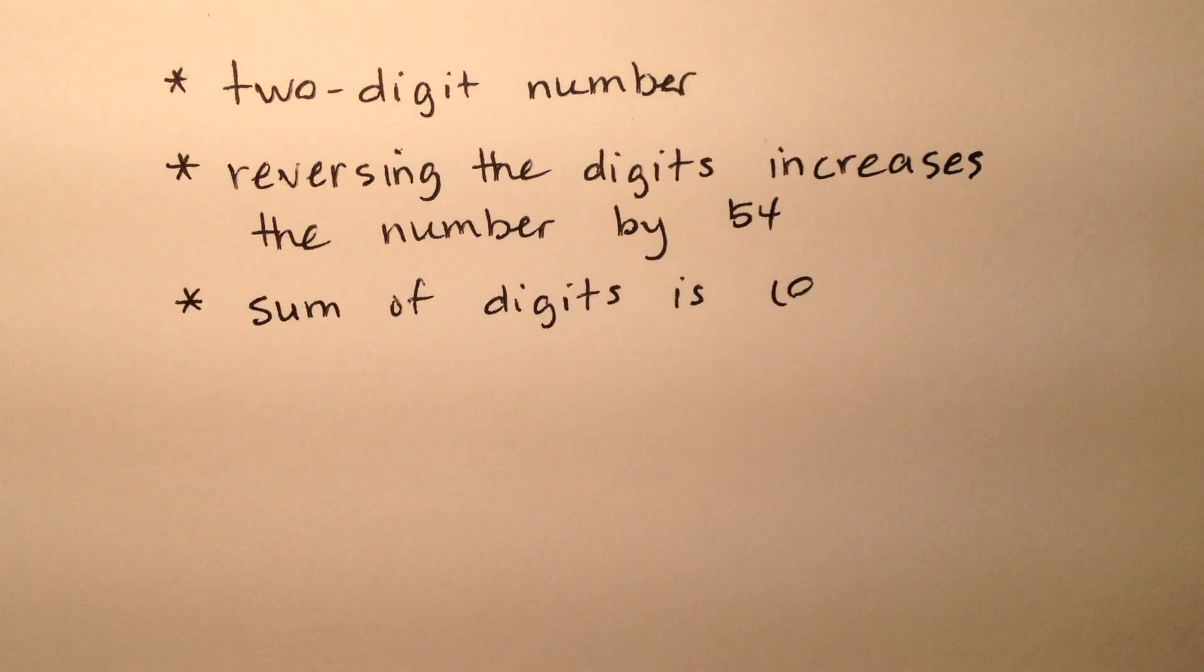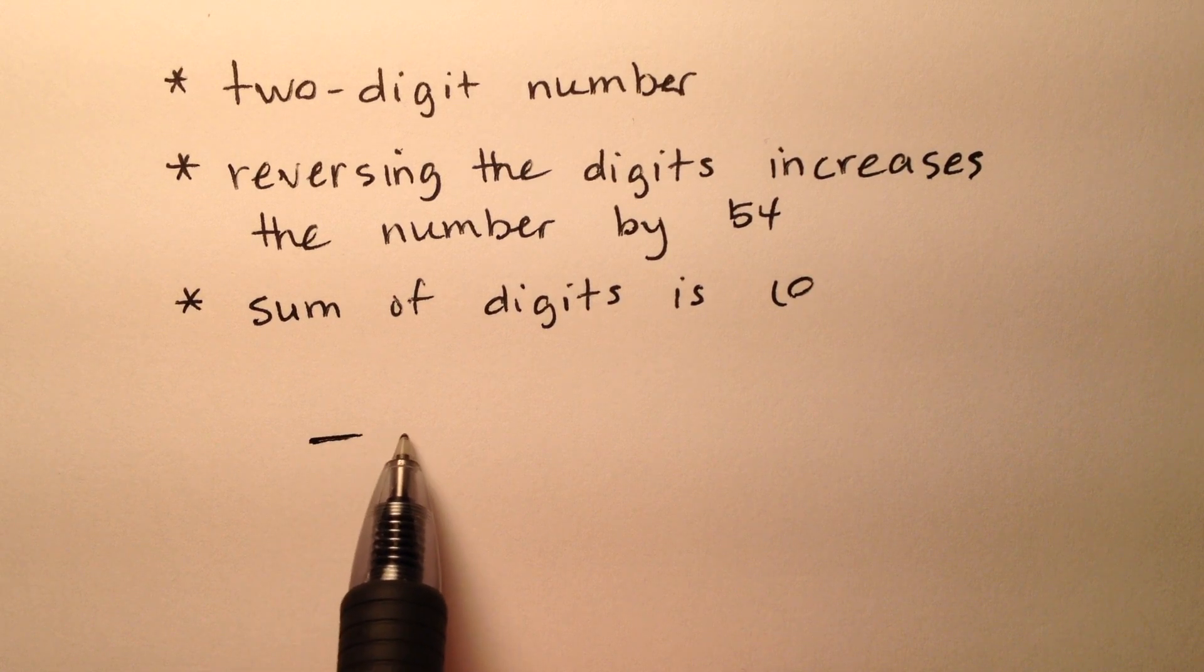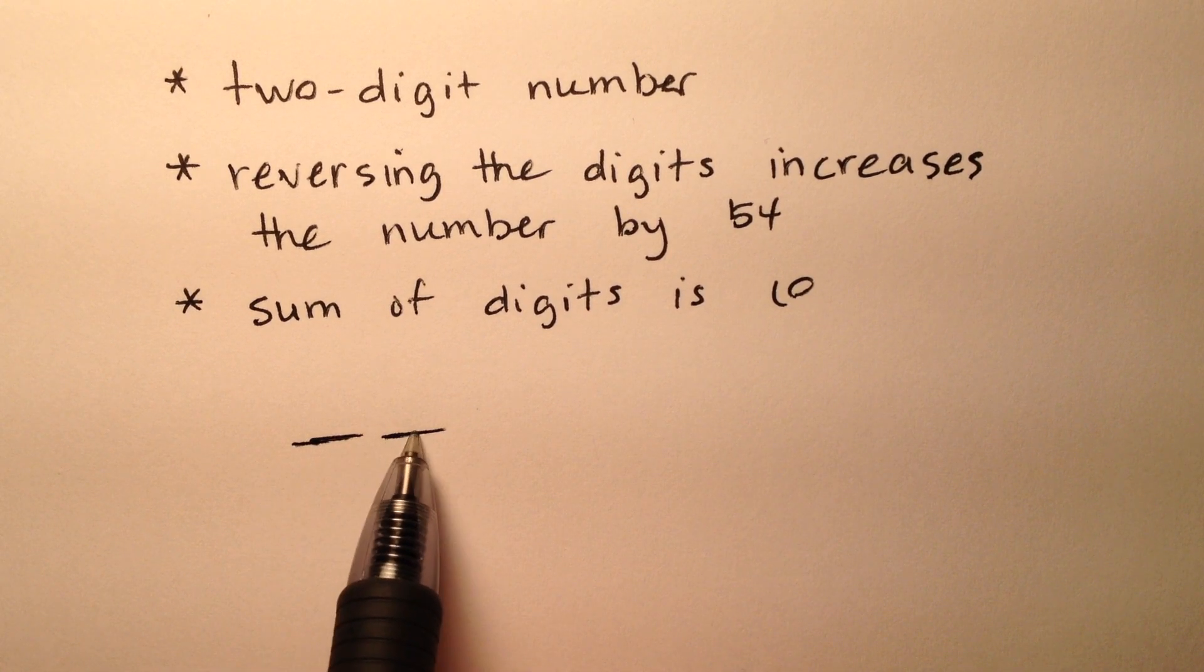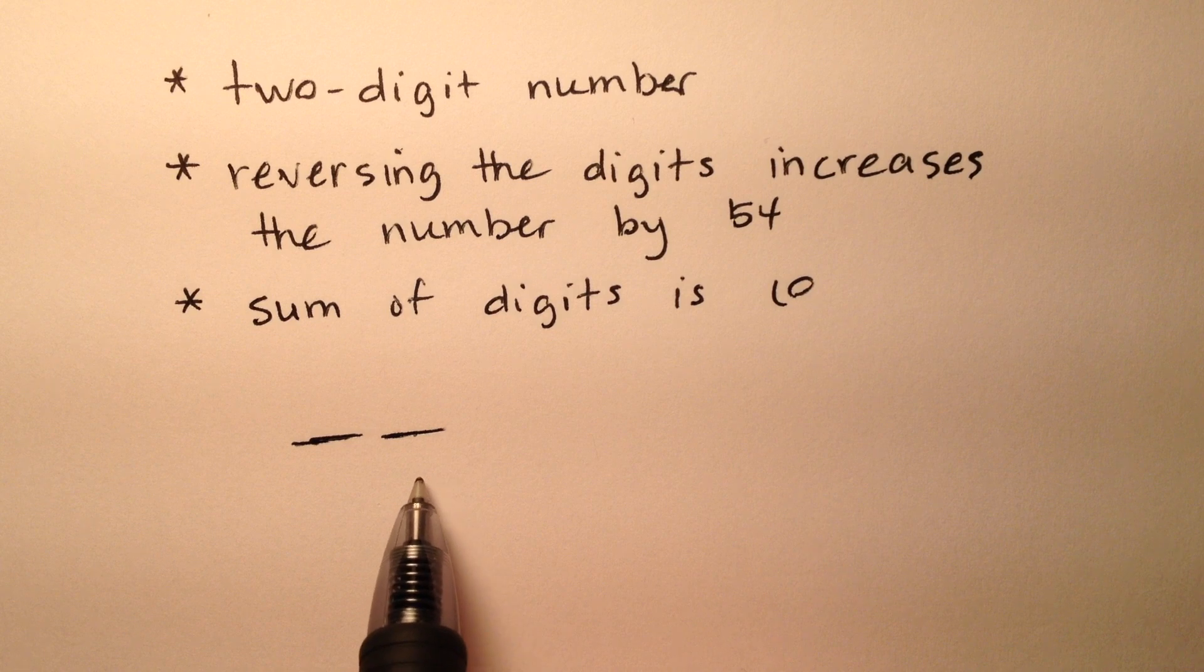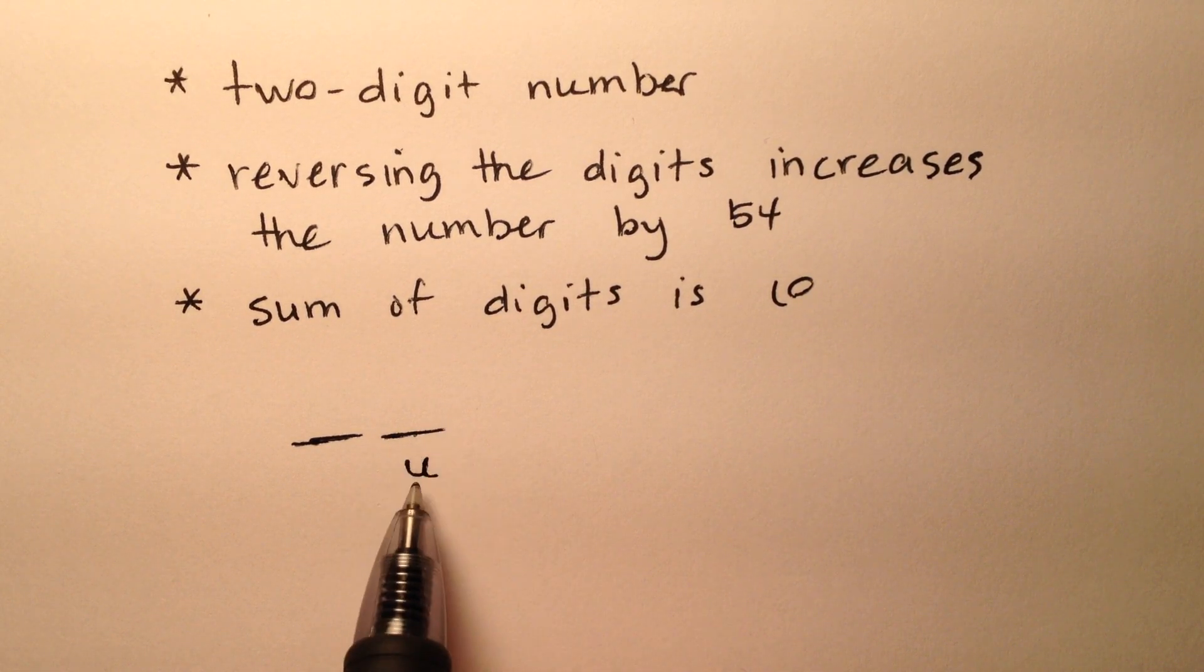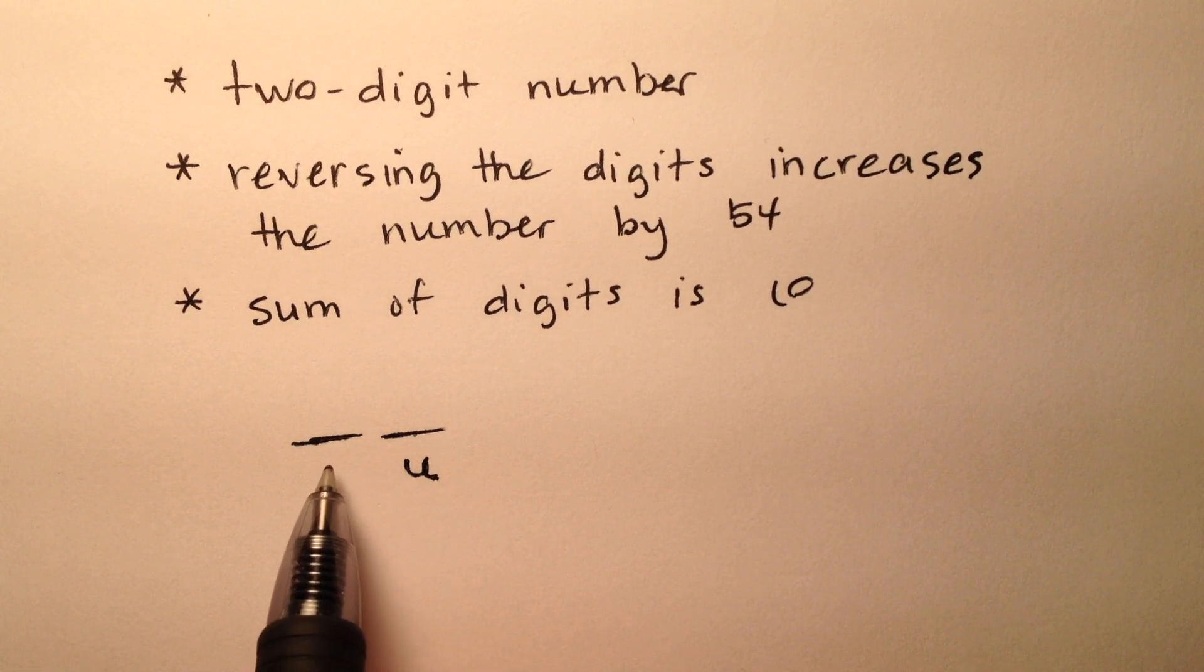I've written down all the pertinent information we need. If it's a two-digit number, we have two values to find. We could call the number in the ones place U, and the number in the tens place T.